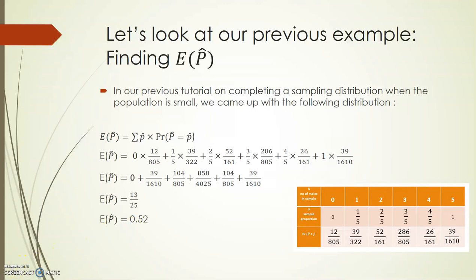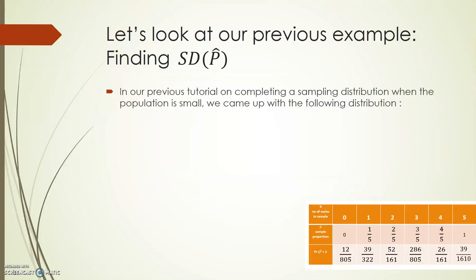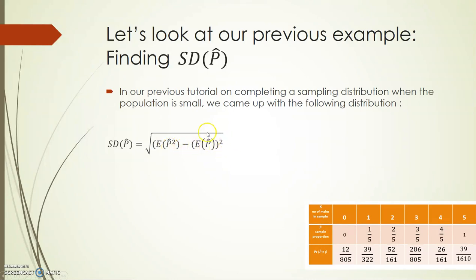So the expected value of the sample proportion p-hat is 0.52. Now let's look at finding the standard deviation of p-hat, using the same distribution. The standard deviation of p-hat is equal to the square root of the expected value of p-hat squared, minus the expected value of p-hat, the whole thing squared.